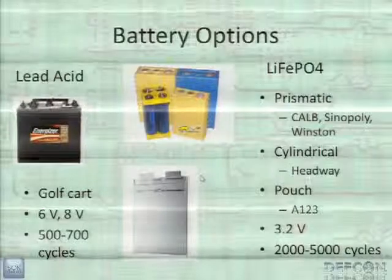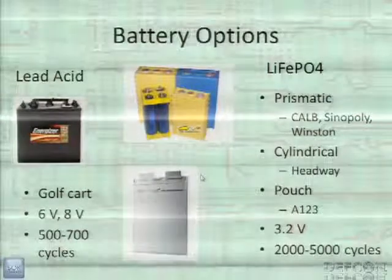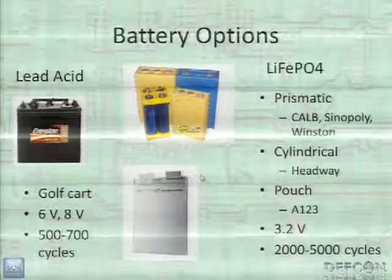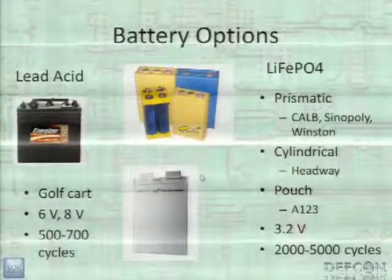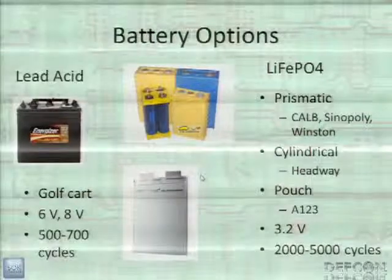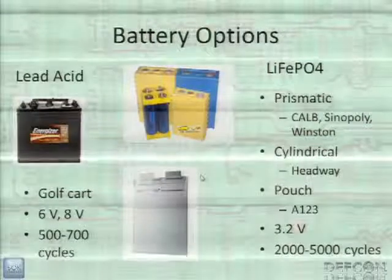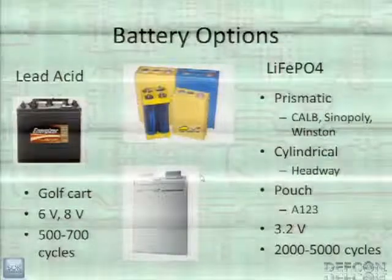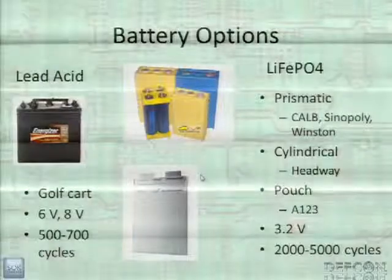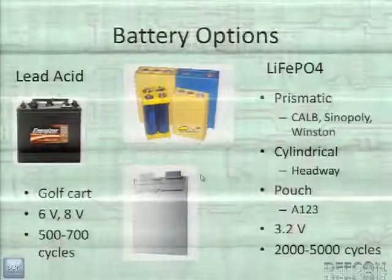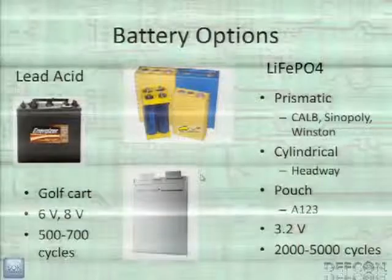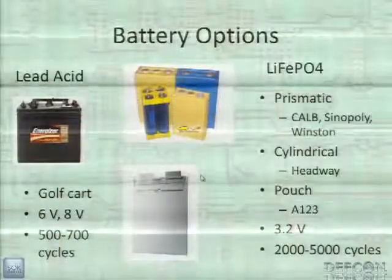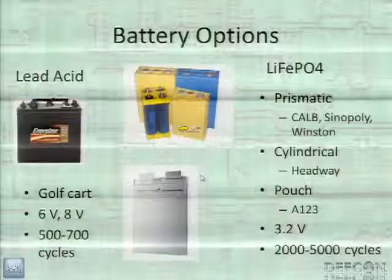These lithium iron phosphate cells are at 3.2 volts nominal each, and you need four to match a 12-volt battery. They last anywhere from 2,000 to 5,000 cycles depending on the manufacturer and how you drive them, so most people expect 8 to 10 years. Some could last 15 to 20 years — we don't really know when calendar life will have a significant impact, since you can test cycle life but not calendar life.